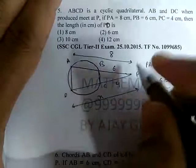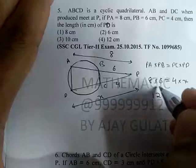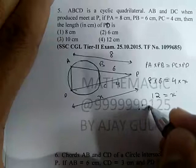So 8 into 6 is 48, divided by 4 gives 12. Therefore PD is equal to 12 cm — option number 4.